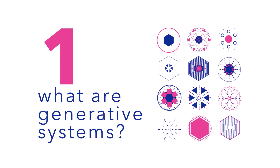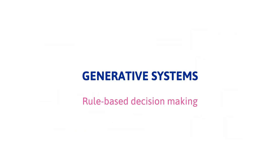What are generative design systems? A quick intro for everyone here. At its most basic, these systems allow us to do rule-based decision making. That means that the system has a couple of rules of things that it can do, and it uses those rules to make decisions. Those decisions end up being output of some kind — it can be numbers, it can be graphics, it could be sound. As the designers or as the coders of this system, we set the parameters by which that system can make those decisions. So we create the rules.